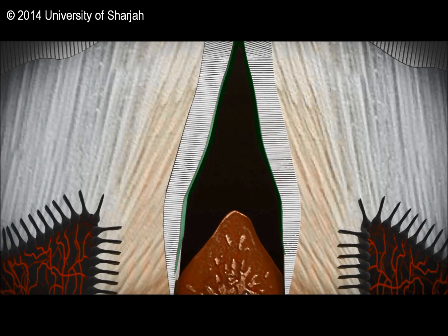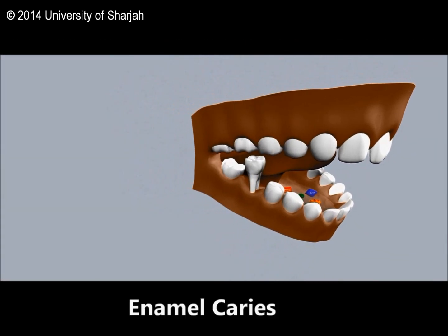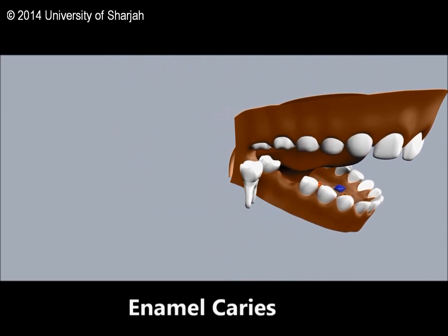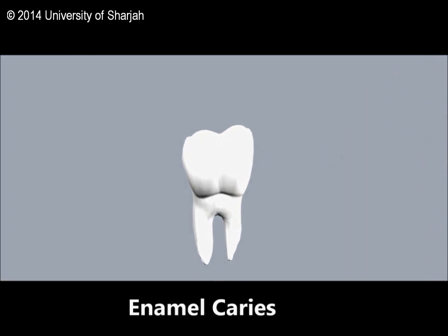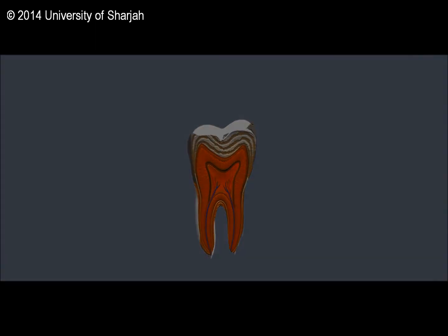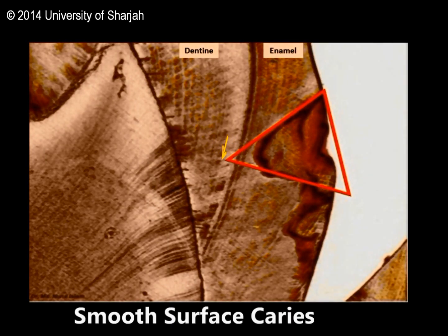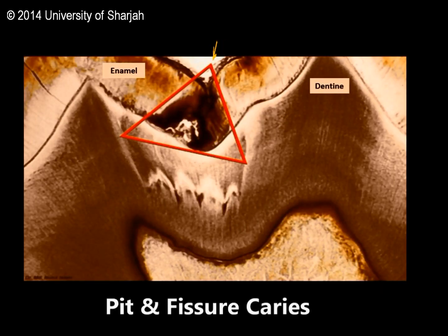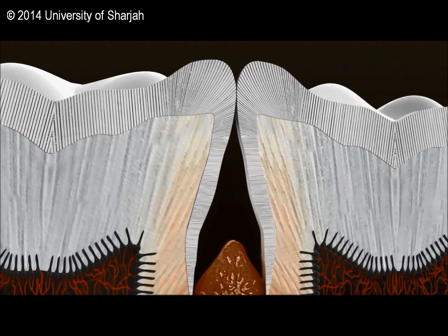Enamel caries is usually the site of the initial lesion unless dentin or cementum become exposed by gum recession. Enamel caries is a dynamic physicochemical process involving dissolution and precipitation of minerals. The initial lesion is conical in shape with its apex towards the dentin for smooth surface caries, and conical with its apex towards the enamel for occlusal caries. A series of four zones of different translucency can be distinguished.